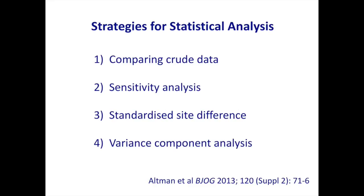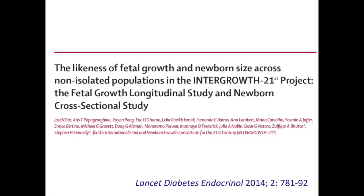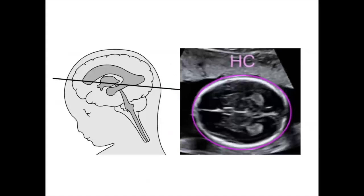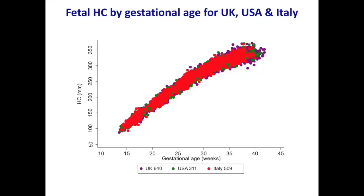This was published in The Lancet Diabetes & Endocrinology in August 2014 and is the summary of the main findings. The key skeletal measurement used for fetal growth across pregnancy is measured through the fetal head on ultrasound. When we plot the actual measurements — crude data from the UK in purple, USA in green, and Italy in red — across the pregnancy the dots are almost entirely overlapping. Within these developed country sites, the range of head circumference across gestational age was pretty much identical.